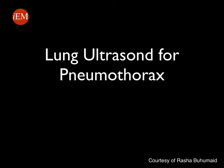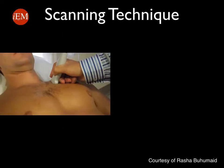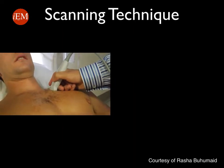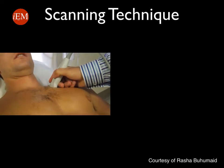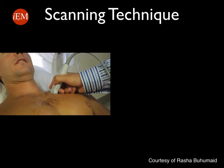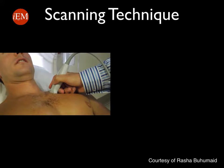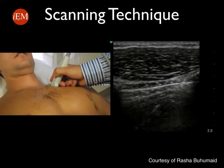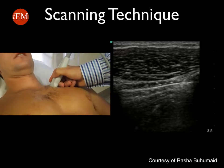In this tutorial, we will discuss how to perform lung ultrasound for pneumothorax. This study is obtained using the linear or vascular probe, or a high-frequency probe. You will place the probe on the anterior chest wall at the mid-clavicular line, probe marker towards the patient's head. You can start between the second and third intercostal space in a supine patient.